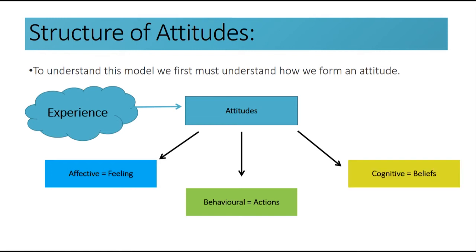The third and final component is the cognitive component. This breaks down our attitude into the thoughts or beliefs we have or form about a particular topic, object, or person. Our beliefs are linked with our knowledge about the world and they develop as a result of our experience throughout the course of our lives. Some beliefs are based on fact — for example, the belief that the flu can be transmitted between people. However, some beliefs are false — for example, it is not true that all psychologists and psychiatrists do the same kind of work.